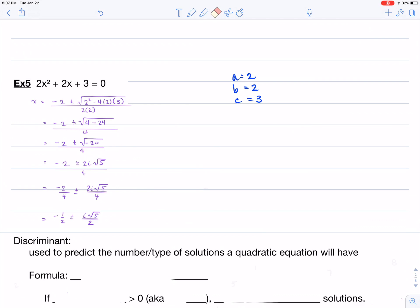And then you can reduce your two separate fractions. So when you reduce your two separate fractions, you're going to have negative 1/2 plus or minus i root 5 over 2.